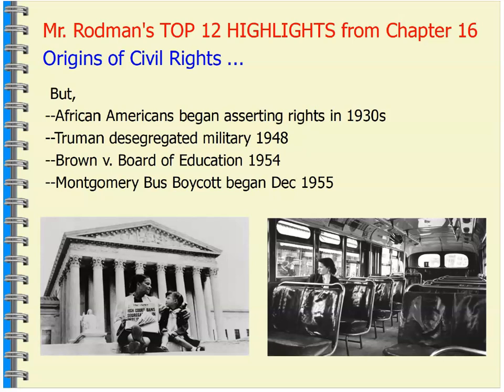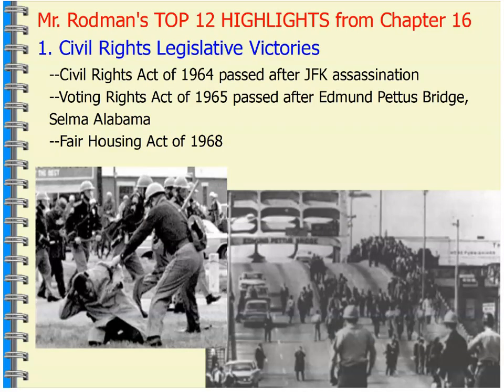We saw President Truman desegregating the military. Then we saw the ruling in Brown saying that separate but equal is unconstitutional. Then we saw the bus boycott, the early parts of the Civil Rights Movement, the letter from a Birmingham jail. All of these things paved the foundation for the Civil Rights Movement. Lyndon Johnson, assuming the presidency after JFK's assassination, really saw this as an opportunity to work with Dr. King and civil rights leaders to pass a civil rights bill that actually has teeth — and the Civil Rights Act of 1964 became that law.